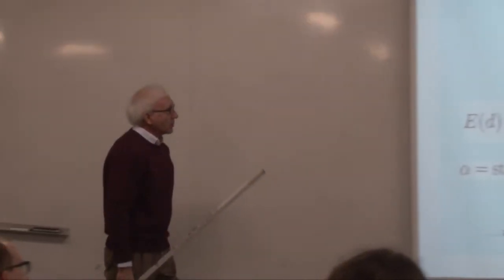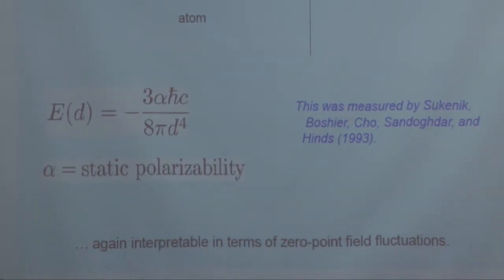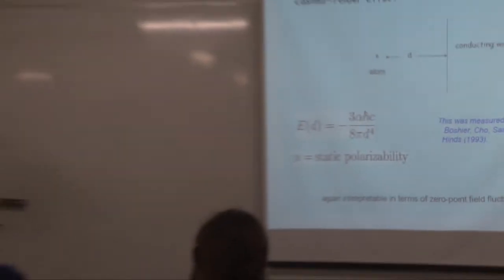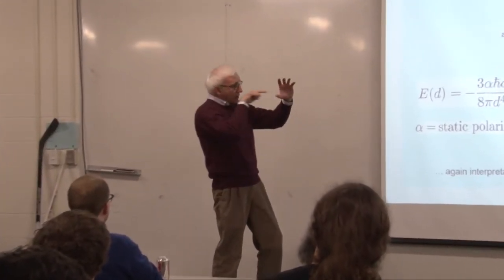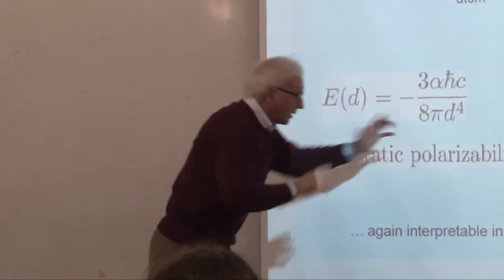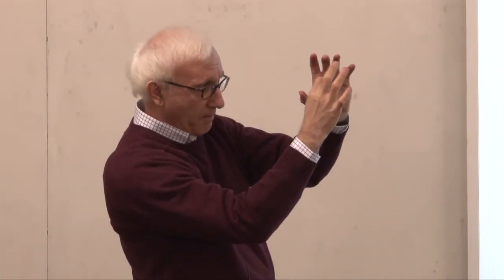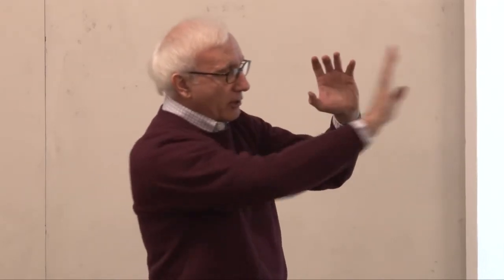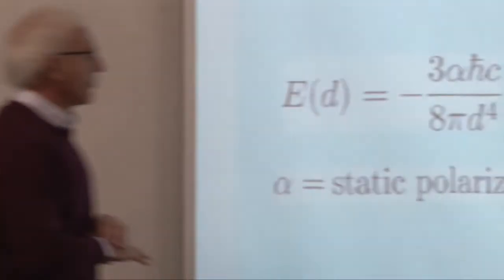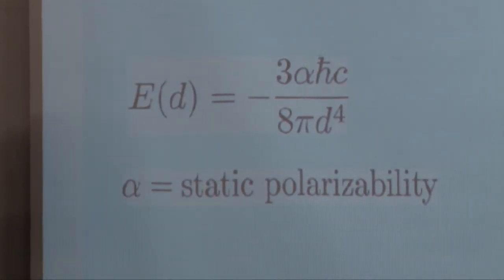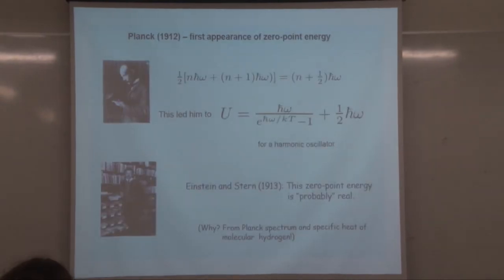This Casimir-Polder atom-wall interaction was measured beautifully by a group at Yale under Ed Hines. They sent a beam of sodium atoms through a tube with perfectly conducting walls. Assuming the 1/d^4 interaction and that atoms stick when they hit the wall, they calculated what fraction of atoms should emerge — using classical Newtonian trajectories with no adjustable parameters — and confirmed it to within a few percent.